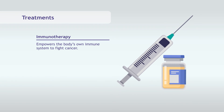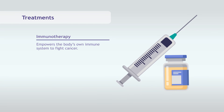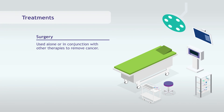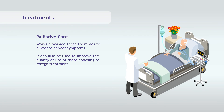Immunotherapy empowers the body's own immune system to fight cancer. Surgery is used to remove cancer from the body and may be used alone or paired with one or more of the other aforementioned therapies. Palliative care works alongside these therapies and treatments to alleviate the symptoms of cancer. It can also be used to improve the quality of life for those choosing to forego treatment.